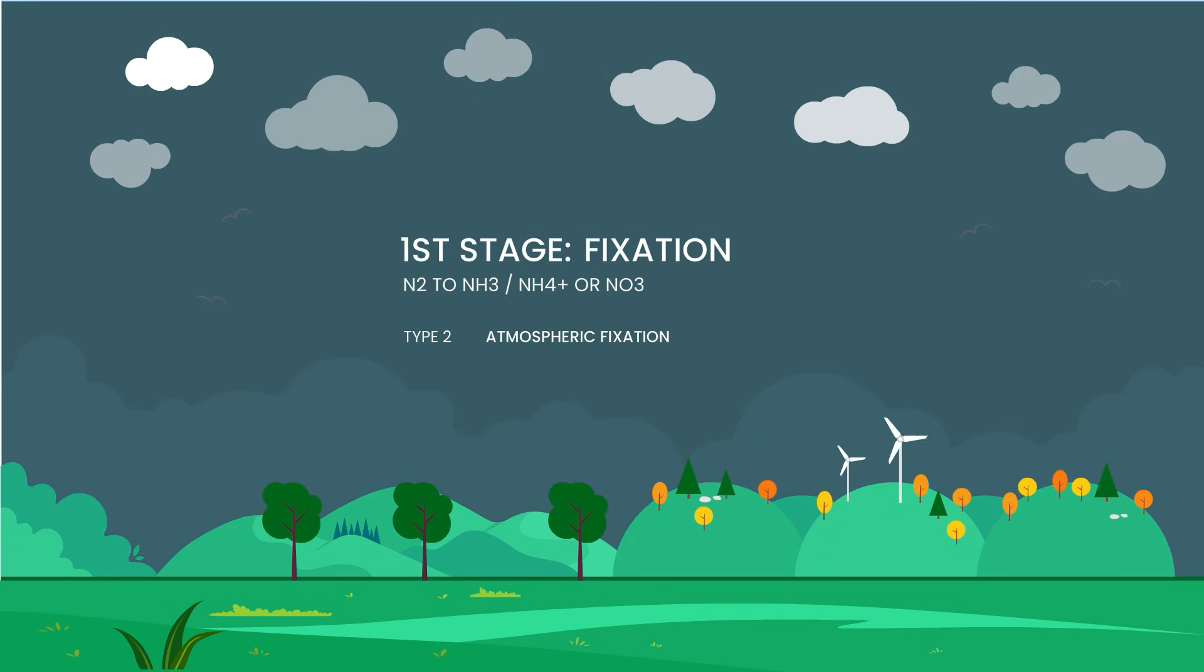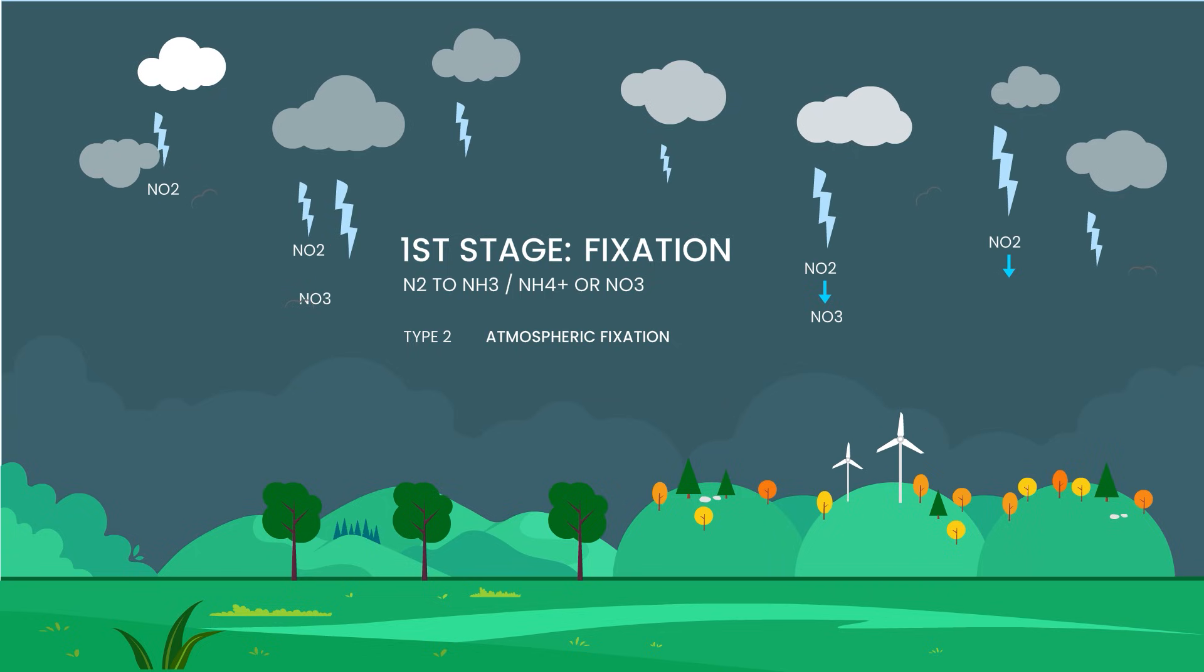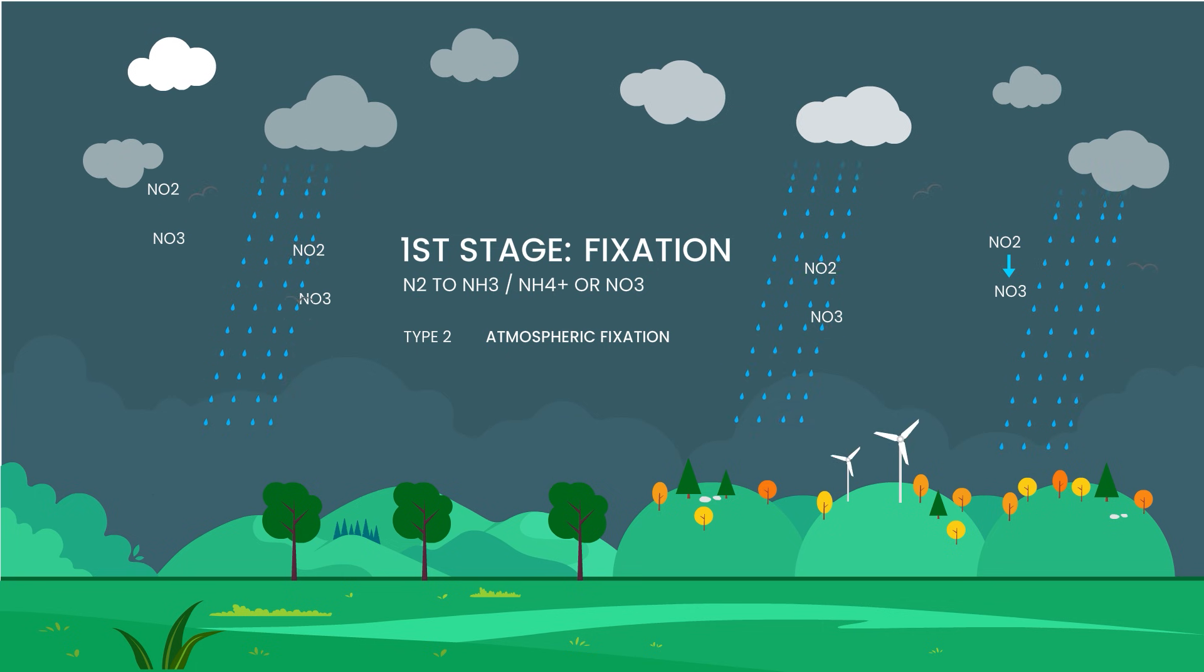There's also atmospheric nitrogen fixation. During a thunderstorm, lightning provides the energy needed to break the strong bonds of nitrogen gas molecules. Nitrogen then combines with oxygen to form nitrogen oxides, which dissolve in rainwater and enter the soil as nitrates. This method accounts for roughly 10% of nitrogen fixation.